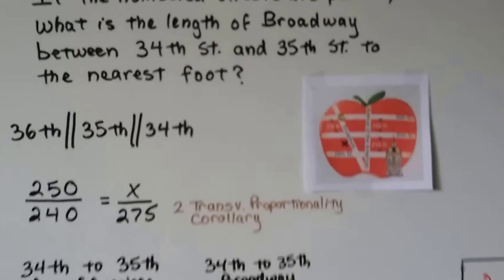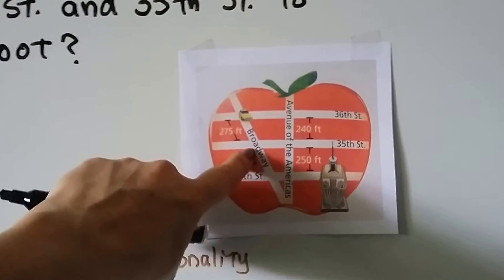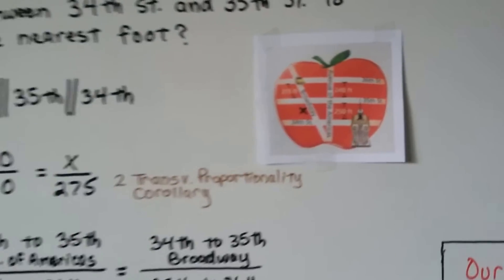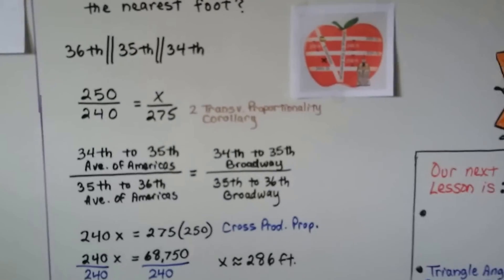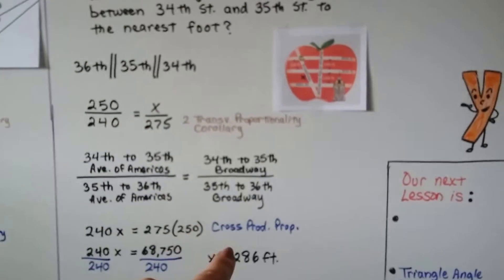So we needed to find this area right here between 34th and 35th Street along Broadway, and we know it's about 286 feet. I think it was like 286.4 or something like that, but it wanted it to the nearest foot.